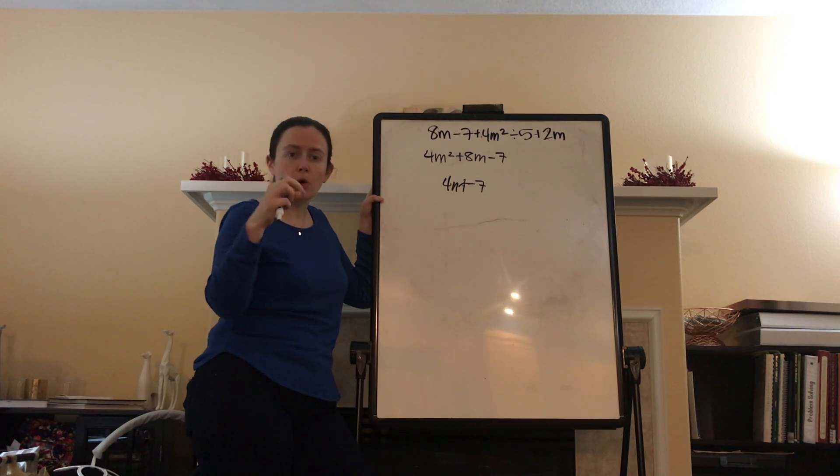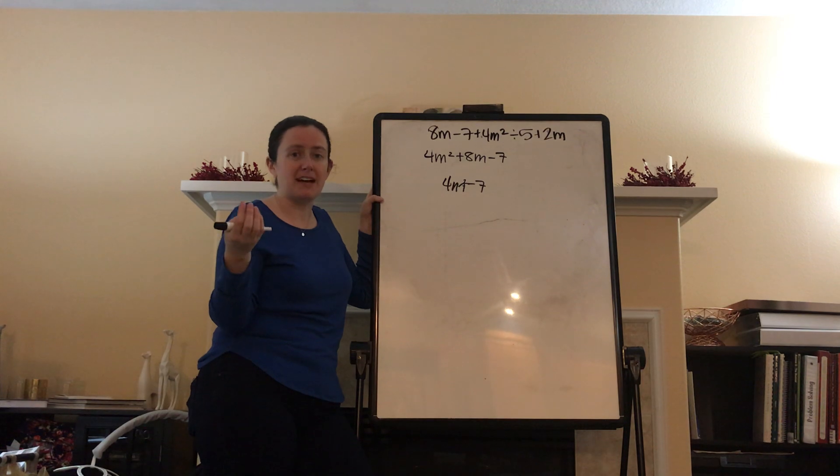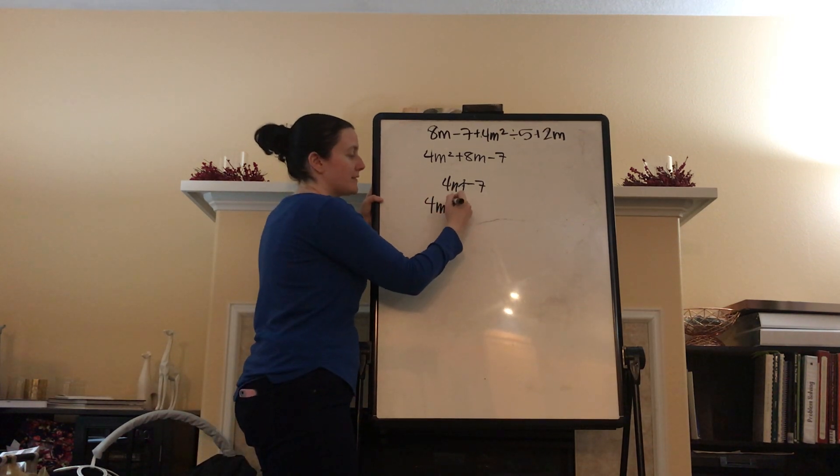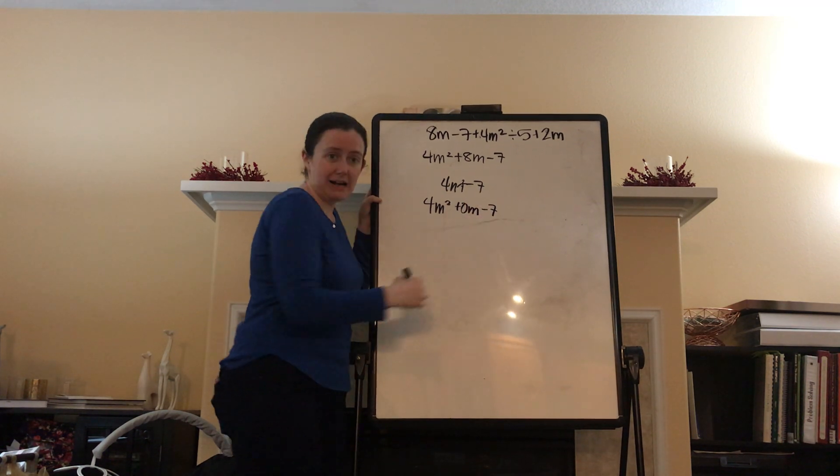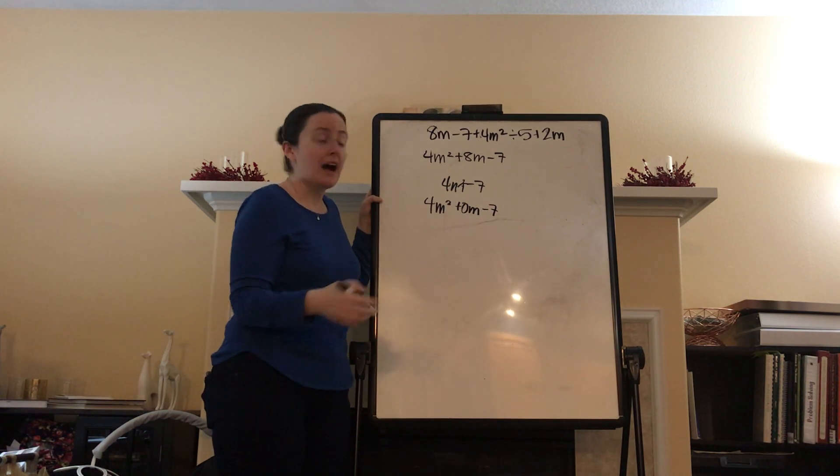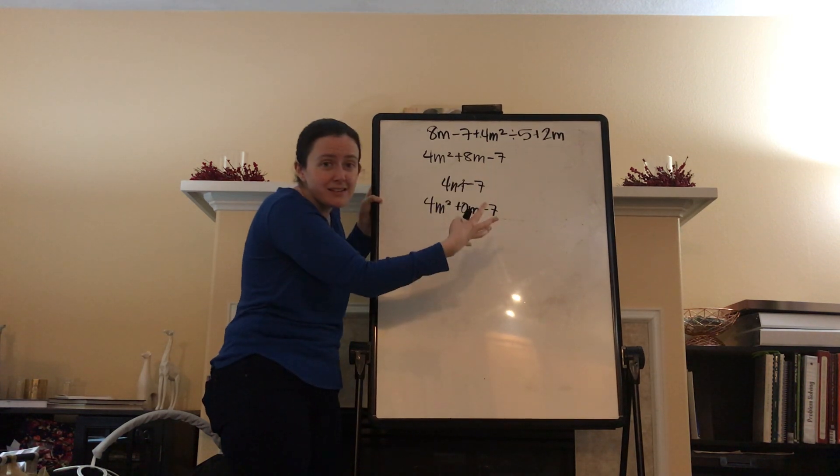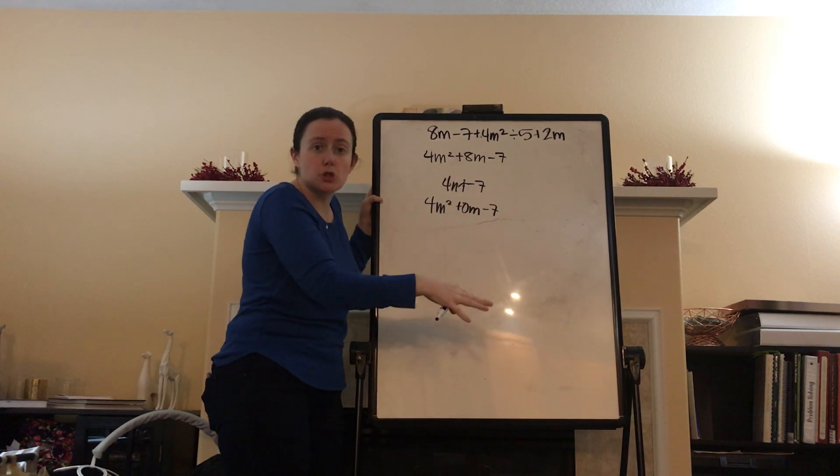If it's missing, how many m's do we have? Well, we would have none. Right? So, we would have needed to rewrite this as 4m squared plus 0m, and then the minus 7. Okay? Again, this is if we were missing the middle term. We're not, so we don't need to do that.